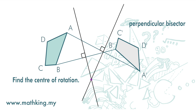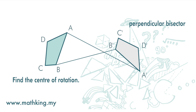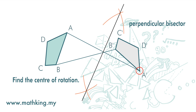We will do it step by step. First, we place the needle point of the compasses on point A and draw an arc above and then below. Then we move the needle point to point A', and without changing the distance between the legs, draw an arc above and then below. We draw a straight line that passes through both intersections. This is the perpendicular bisector of line AA'.